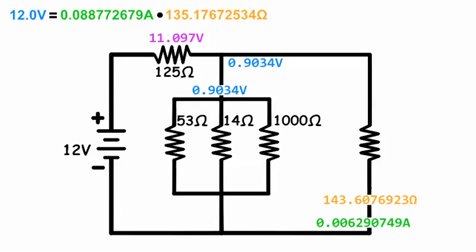Next, remembering to move in the direction of current flow, we solve for the voltage drop across the series resistor in this parallel branch.